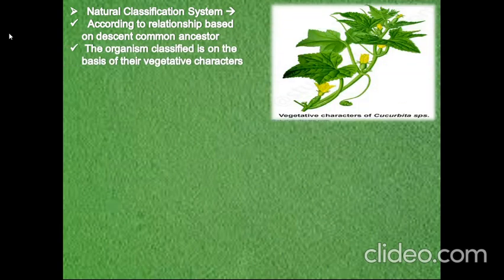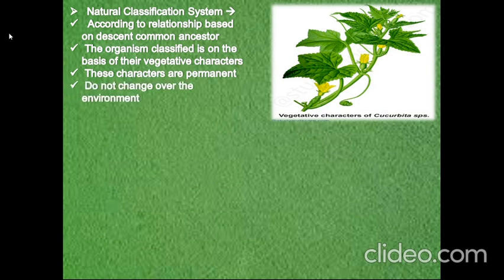Next we will talk about Natural Classification System. According to relationship based on descent from common ancestor, the organism is classified on the basis of their vegetative characters, and these characters are permanent and do not change with the environment.